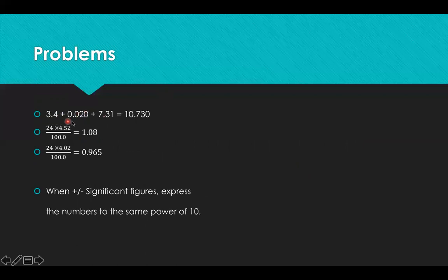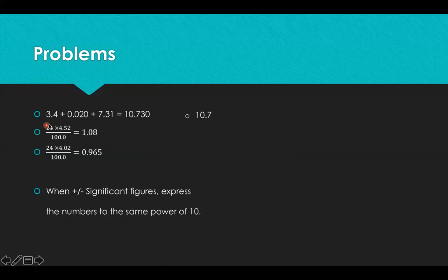For the addition example: 3.4 + 0.20 + 7.31. The least precise measurement is 3.4 because it has the fewest digits to the right of the decimal place — only one. So when you add these and get 10.73, the final answer should have only one decimal place, which gives 10.7.